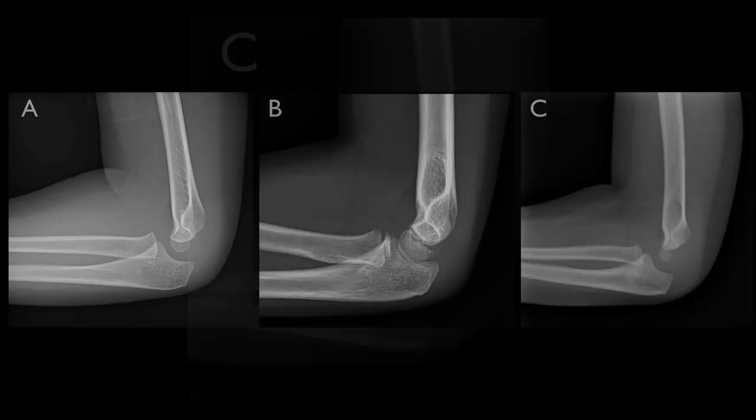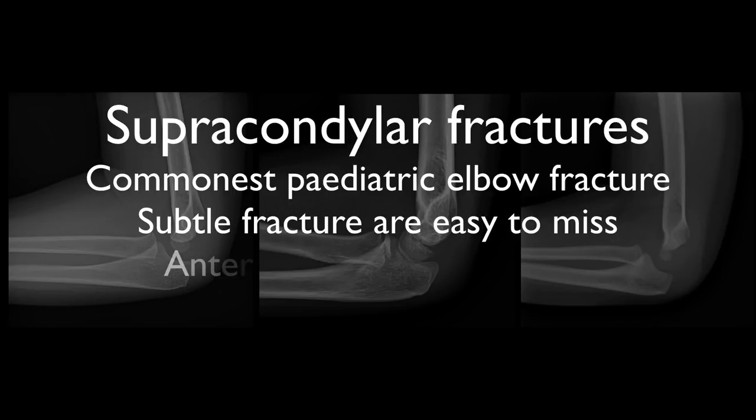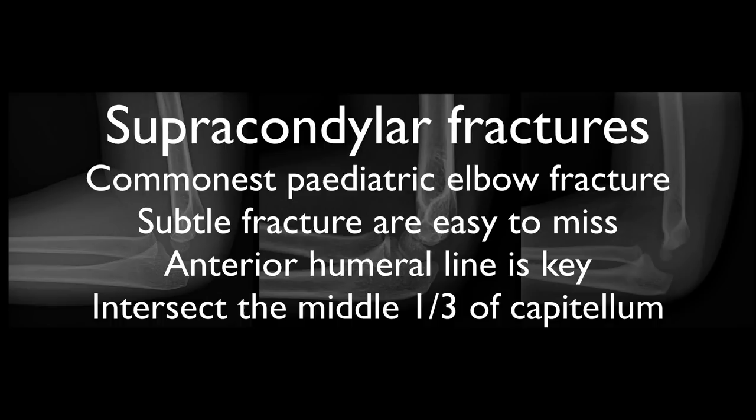So we have seen two cases of supracondylar fractures and learnt that they are the commonest paediatric elbow fracture and subtle and easy to miss in certain circumstances. In these subtle examples the anterior humeral line is key. It should always intersect the middle third of the capitellum, and where it doesn't we should look for associated elbow effusions or minor cortical irregularities that herald the supracondylar fracture.